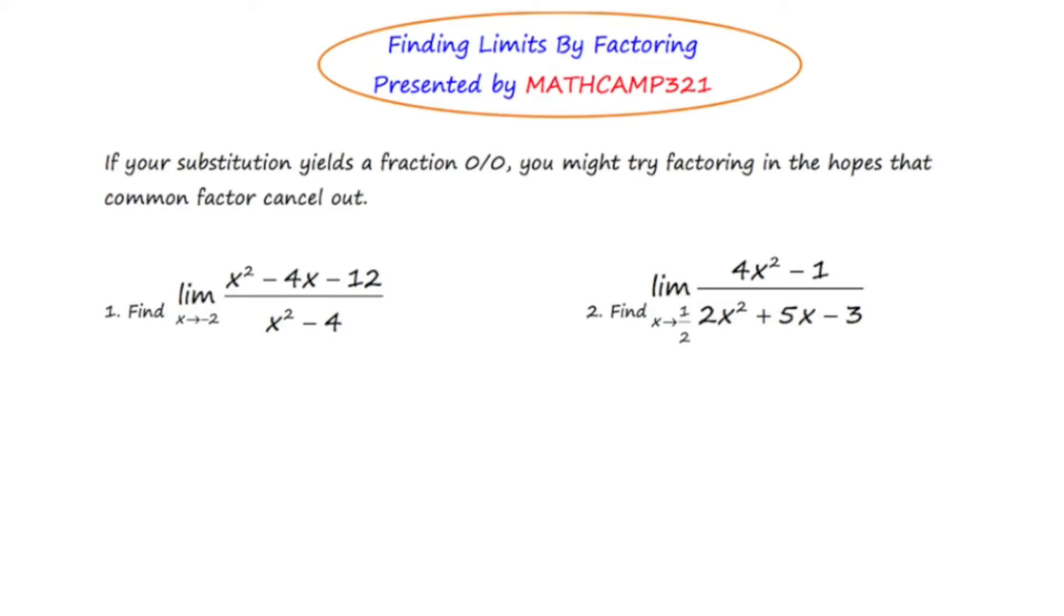Let me show you a couple of examples. Looking at number 1, we're asked to find the limit of this big rational function as x approaches negative 2. Let's just take a moment and substitute in negative 2 and see what happens. If I substitute negative 2 into the first term, I end up getting 4. Negative 4 times negative 2 is 8, and then the trinomial ends with minus 12. This is going to be over negative 2 squared, which is 4, minus 4. So in the end, when we simplify this, we get 12 minus 12, which is 0, over 4 minus 4, which is also 0. This is indeterminate form, and it means we have to try something else.